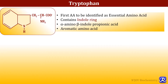Tryptophan is the first amino acid to be identified as an essential amino acid and it contains an indole ring. It is alpha amino beta indole propionic acid and it is an example of an aromatic amino acid; the other two aromatic amino acids are phenylalanine and tyrosine.